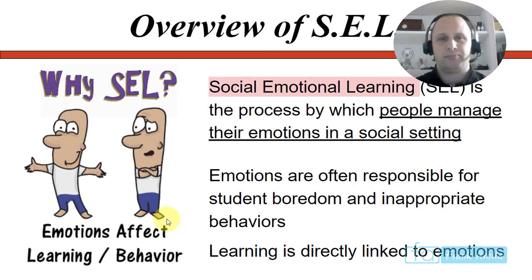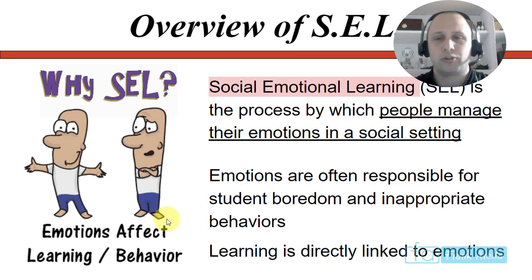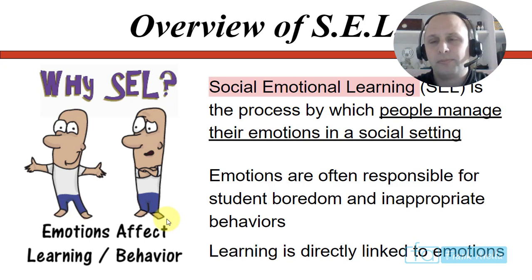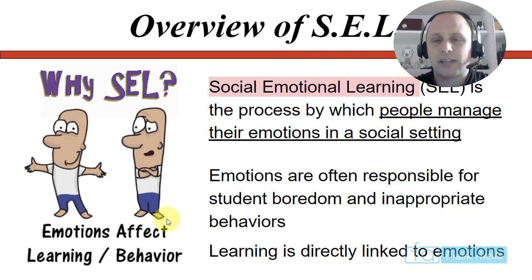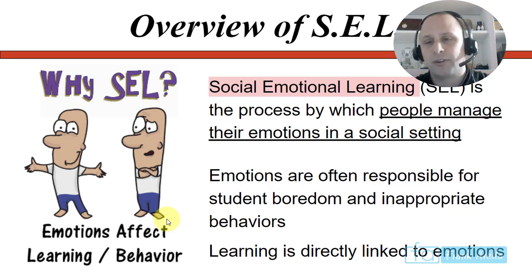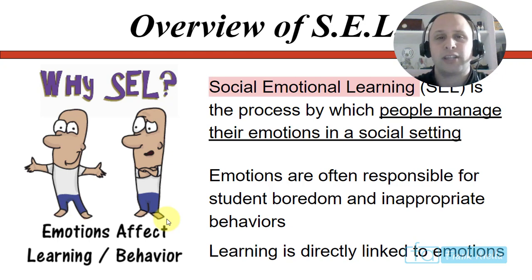So let's begin. Social emotional learning is a process by which people manage their emotions in a social setting. We all know what it means to be a little awkward in a social position, but some have a much greater difficulty in social settings — especially children, who have really difficult problems managing their emotions. Emotions are responsible for student boredom, inappropriate behavior, and learning is directly linked to emotions, as research on education shows.